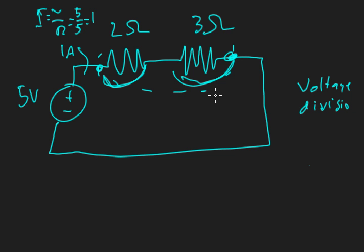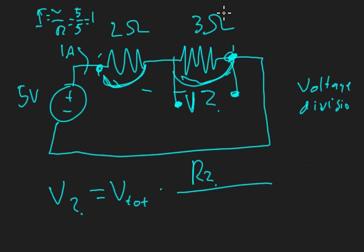Say we want to find this voltage. What is the potential difference between this point and this point? V₂ is equal to the total voltage times the resistance of the voltage you want to measure, so that would be this resistor here, divided by R₁ plus R₂.